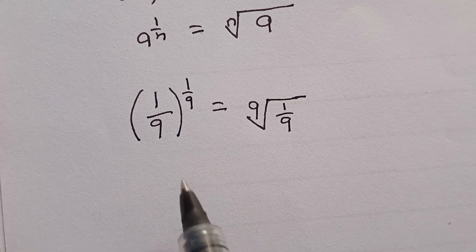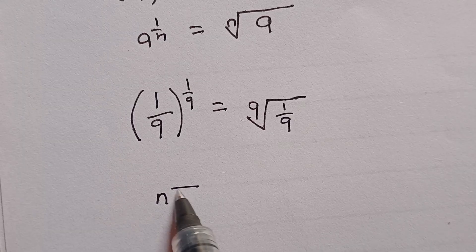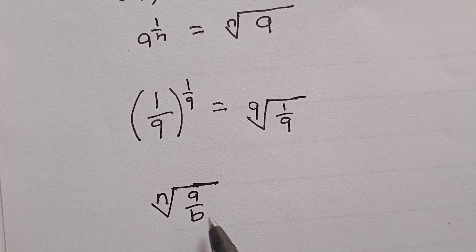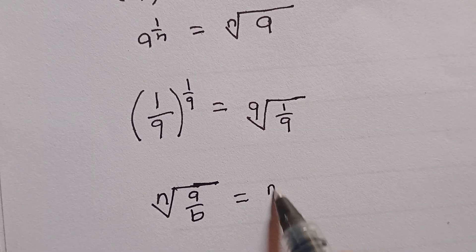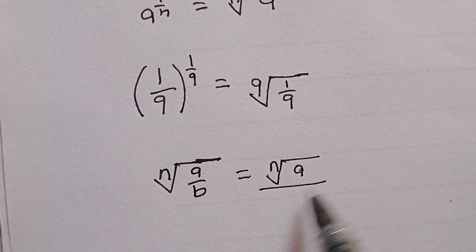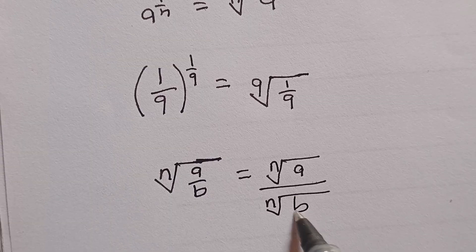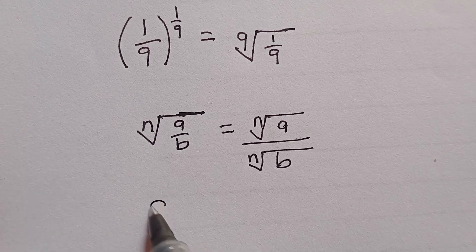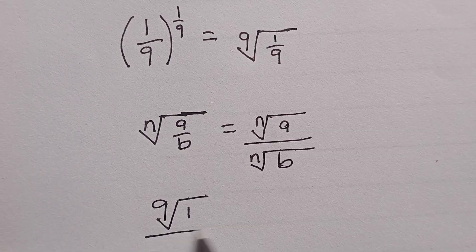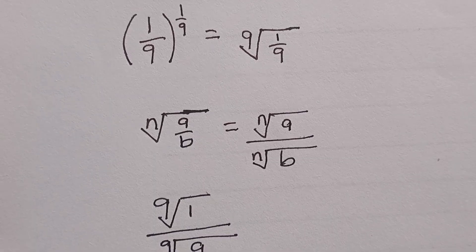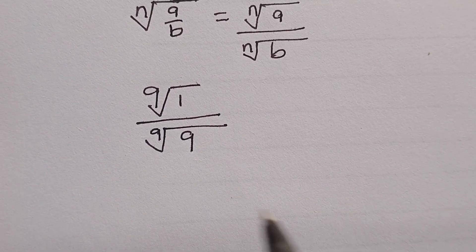Once you understand it up to this stage, it's easy and straightforward. Don't forget, when you have the nth root of a divided by b, it can simply be written as the nth root of a divided by the nth root of b, according to the rule of mathematics. So we can easily have the 9th root of 1, everything divided by the 9th root of 9.